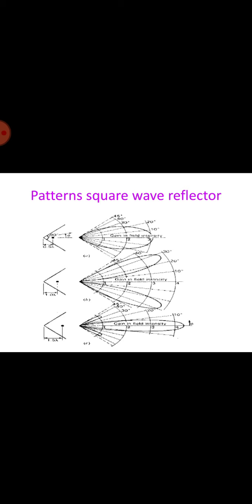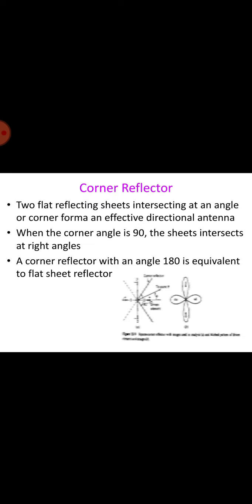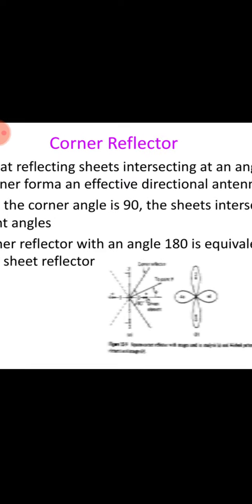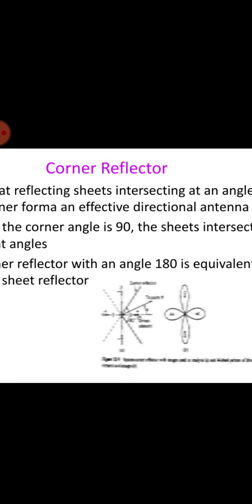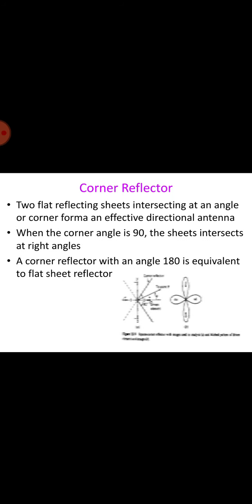In the analysis of the 90 degree corner reflector, there are 3 image elements 2, 3, and 4 as you can see in this figure. The driven element 1 and the 3 images have currents of equal magnitude. The phase of the currents in 1 and 4 is the same. The phase of the currents in 2 and 3 are the same, but 180 degrees out of phase with respect to the currents in 1 and 4. All elements are assumed to be lambda by 2 long.